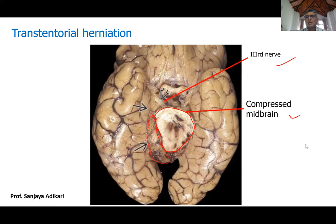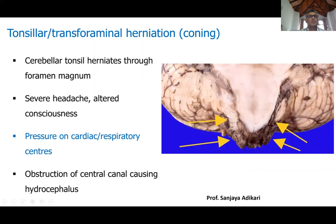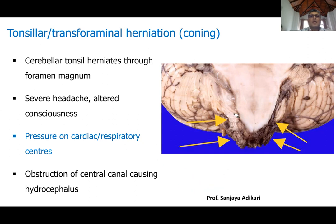Tonsillar herniation — also called transforaminal herniation — occurs because the cerebellar tonsils lie just above the foramen magnum. When pressure increases in the upper compartment and is untreated, it transmits down into the posterior cranial fossa, and the cerebellar tonsils herniate down through the foramen magnum. The problem is not the tonsils themselves but compression of the medulla and brain stem, which have insufficient space alongside the herniating tissue.